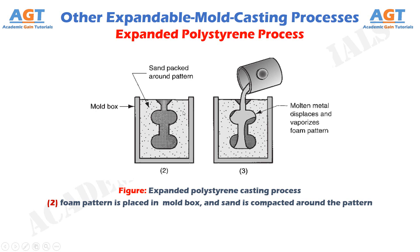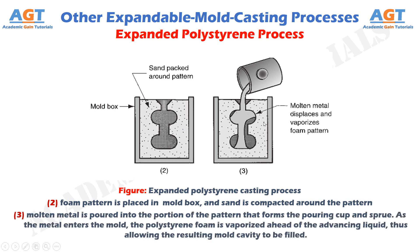Figure 3 shows the third and final step in the expanded polystyrene casting process, where molten metal is poured into the portion of the pattern that forms the pouring cup and sprue. As the metal enters the mold, the polystyrene foam is vaporized ahead of the advancing liquid, thus allowing the resulting mold cavity to be filled.